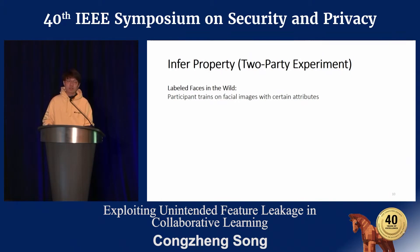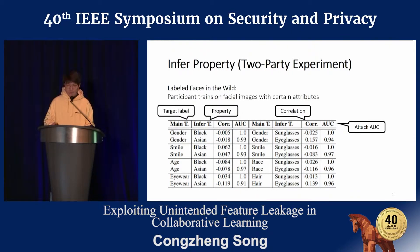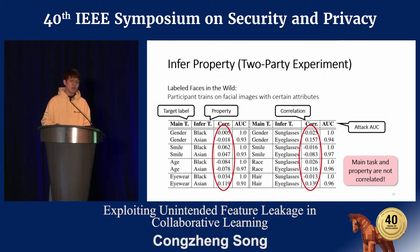Now let's see some results. I'll first show results on inferring properties in a two-party setting using the Labeled Faces in the Wild dataset. The participant trains on facial images with certain facial attributes. In the table, we show the target label the model is trying to learn, the property the adversary wishes to infer, the correlation between the task label and the property, and the attack AUC score. The AUC scores are very high — near perfect for some properties. More importantly, the correlation between the task label and the property is very small, demonstrating that model updates really leak uncorrelated information about the input data.